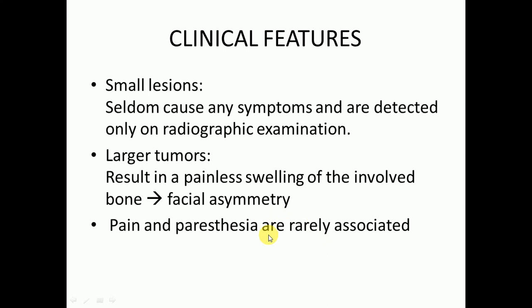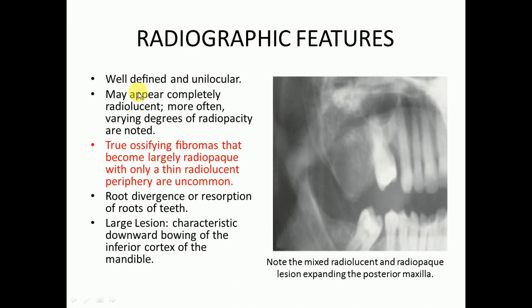Regarding radiographic features, ossifying fibroma has well-defined and unilocular borders. It may appear completely radiolucent, but more often varying degrees of radiopacity are noted — meaning the area will appear dark on the radiograph with some whitish material within that dark area.